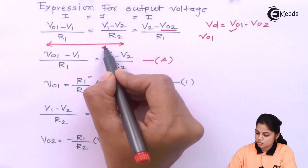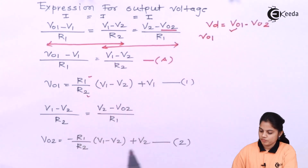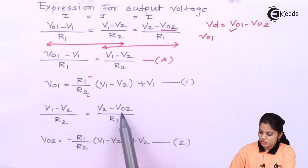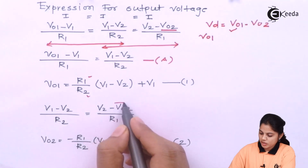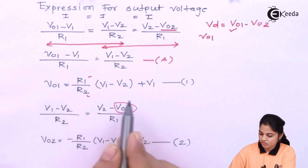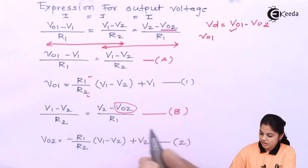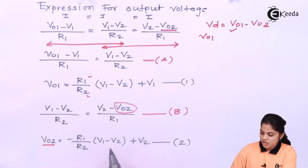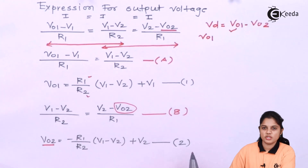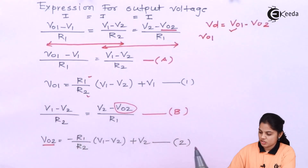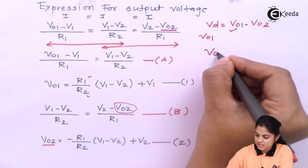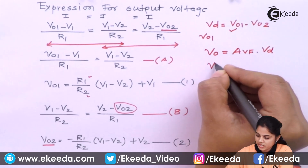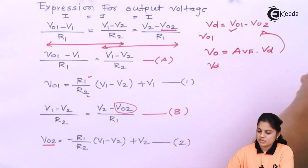Next, equating the last two terms to find V02: (V1 − V2)/R2 = (V2 − V02)/R1. Solving for V02 gives Equation 2: V02 equals minus R1/R2 times (V1 − V2) plus V2. Now with Equation 1 and Equation 2, we find V0 equals the closed loop gain AVF multiplied by Vd, where Vd equals V01 minus V02.